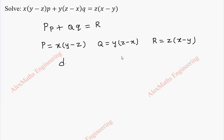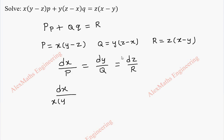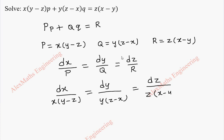Now to get a solution we have to solve dx/P equal to dy/Q equal to dz/R. By substitution we get dx / x(y−z) equal to dy / y(z−x) equal to dz / z(x−y).